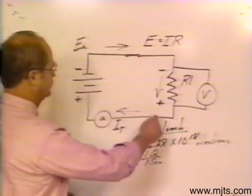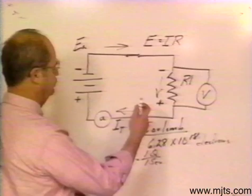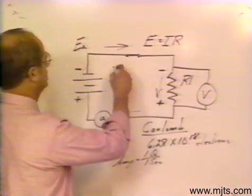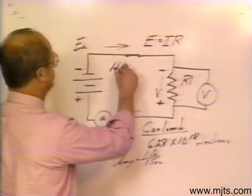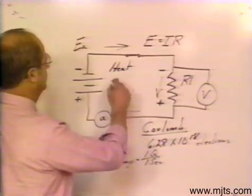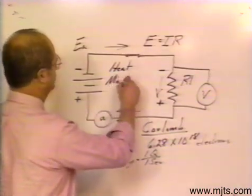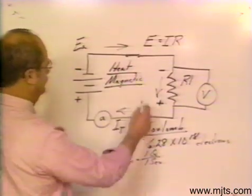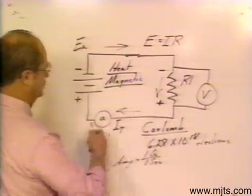This flow of electrons through a circuit gives us two effects which are particularly important. One is the heat effect that we get from electrons flowing through the circuit, and the other is the magnetic. We get both of those effects when current flows through a circuit.